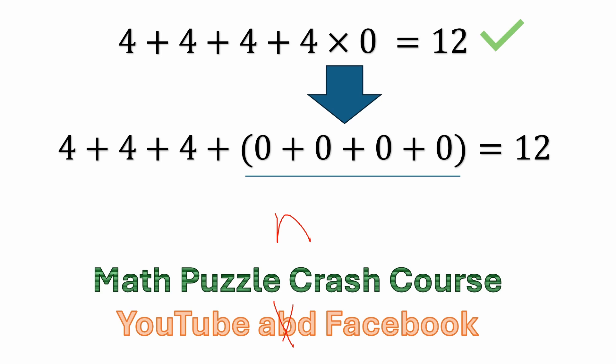A lot of people answer this and think the answer is 0. What they're doing is adding 4 plus 4 plus 4 plus 4 to get 16, then saying 16 times 0 is 0. Well, no — that's not correct at all. The reason is that multiplication has precedence. It would be a mistake to just go left to right.